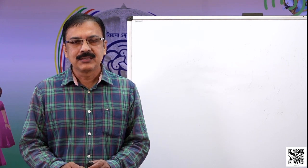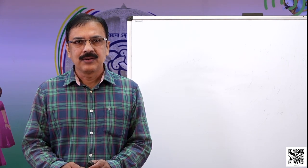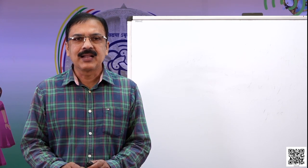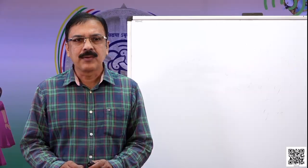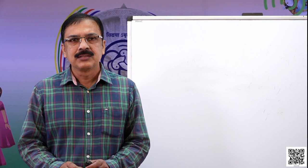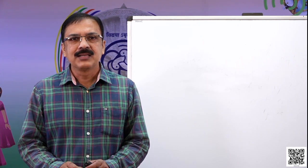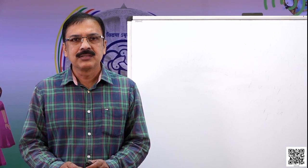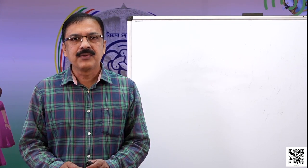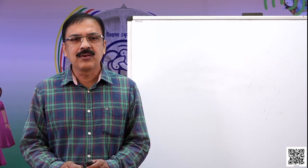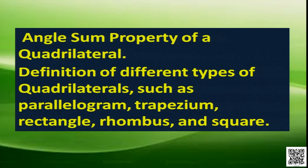Dear students, in an earlier session we discussed something about quadrilaterals — what is the angle sum property of quadrilaterals, meaning the sum of the interior angles of a quadrilateral is 360 degrees. We also discussed definitions of certain types of quadrilaterals, such as trapezium, parallelogram, rectangle, rhombus, and square.